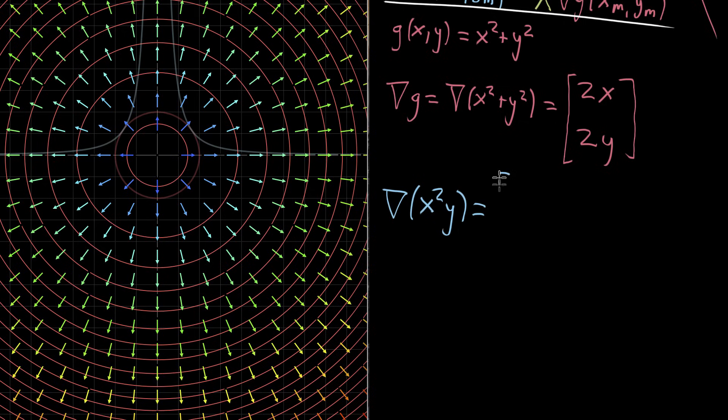We do the same thing. First component, partial derivative with respect to x. x looks like a variable. So its derivative is 2 times x. And then that y looks like a constant when we're up here. But then partial derivative with respect to y. That y looks like a variable. That x squared just looks like a constant sitting in front of it.